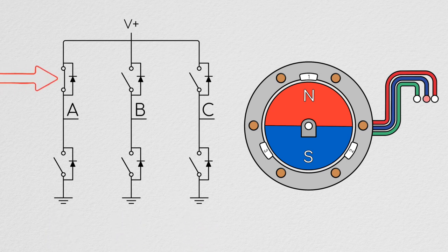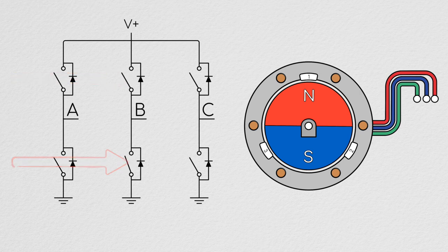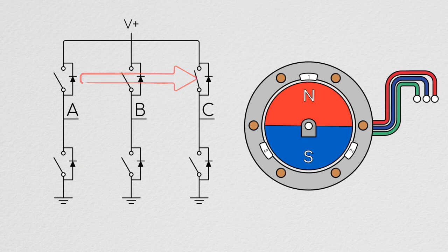Closing this switch will connect phase A of our motor to high. This switch will connect phase A to ground. This will connect phase B to high, this phase B to ground, this phase C to high, and finally, this phase C to ground.